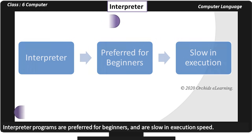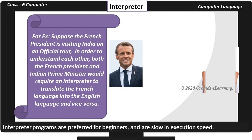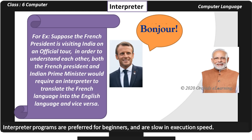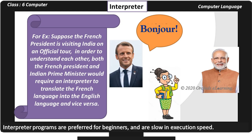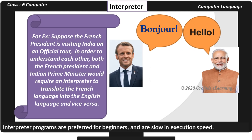Interpreter programs are preferred for beginners and are slow in execution speed. For example, suppose the French President is visiting India on an official tour. In order to understand each other, both the French President and Indian Prime Minister would require an interpreter to translate the French language into the English language and vice versa.